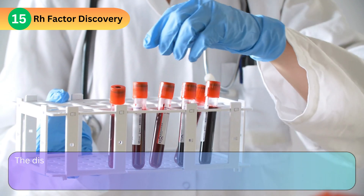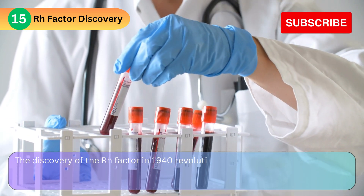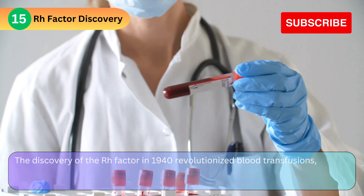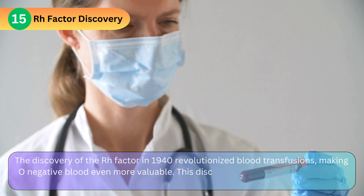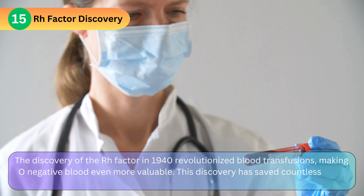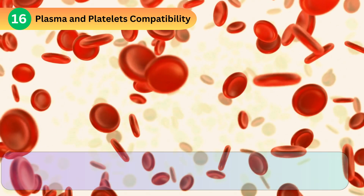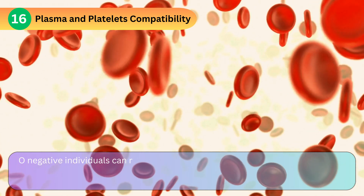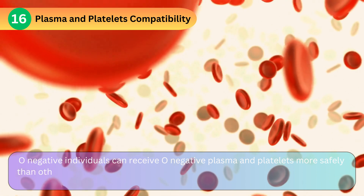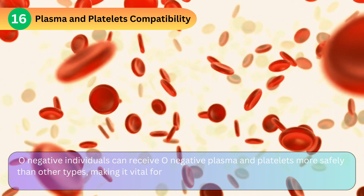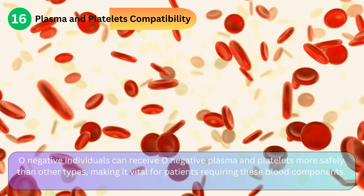RH Factor Discovery: The discovery of the RH factor in 1940 revolutionized blood transfusions, making O negative blood even more valuable. This discovery has saved countless lives. Plasma and Platelets Compatibility: O negative individuals can receive O negative plasma and platelets more safely than other types, making it vital for patients requiring these blood components.